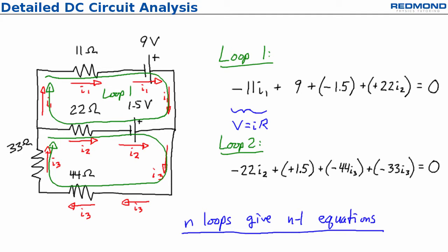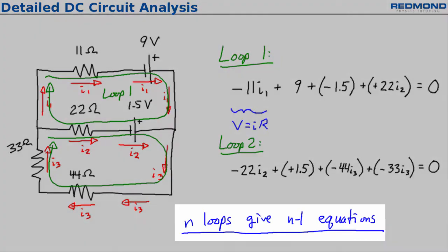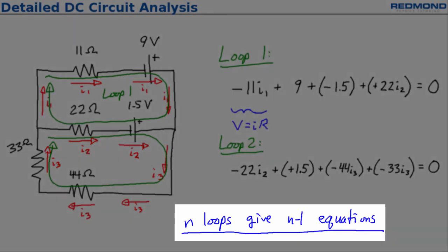There is a third loop, but the equation from that loop is not independent. If I wrote that equation and tried to solve the three loop equations for the three unknown currents, I would eventually get 0 equals 0 and be unable to solve. Remember, n loops gives n minus 1 useful equations.